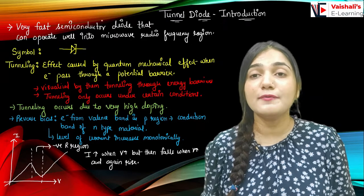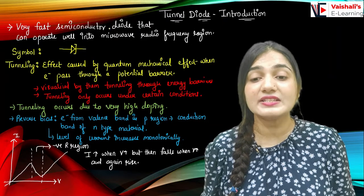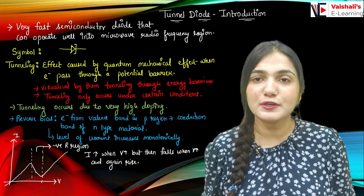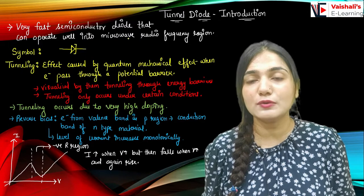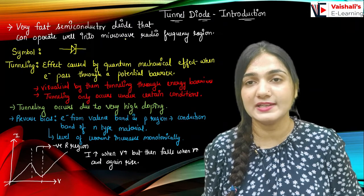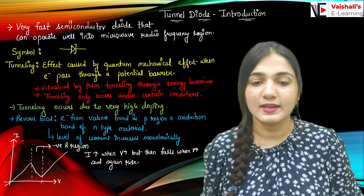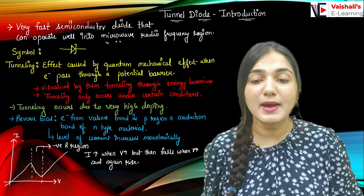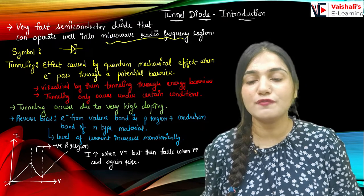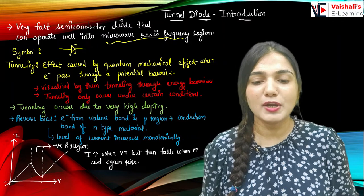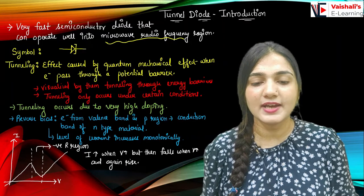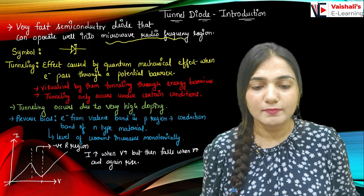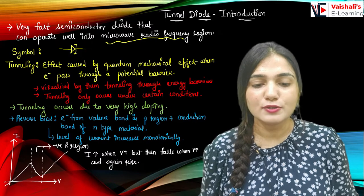What is a tunnel diode? It's a very fast semiconductor diode. Its switching speed is very fast, due to which we can use it in very high frequency oscillators as well. So it is a very fast semiconductor diode that can operate well in the microwave radio frequency region. The symbol of the tunnel diode is like this — it's the diode symbol and here we have two lines.